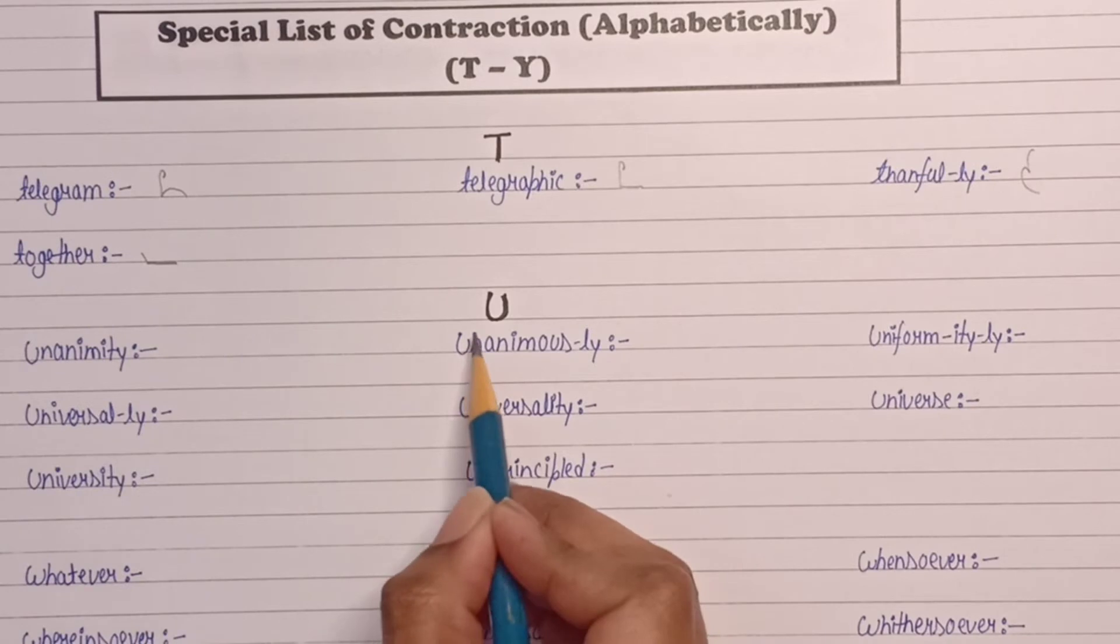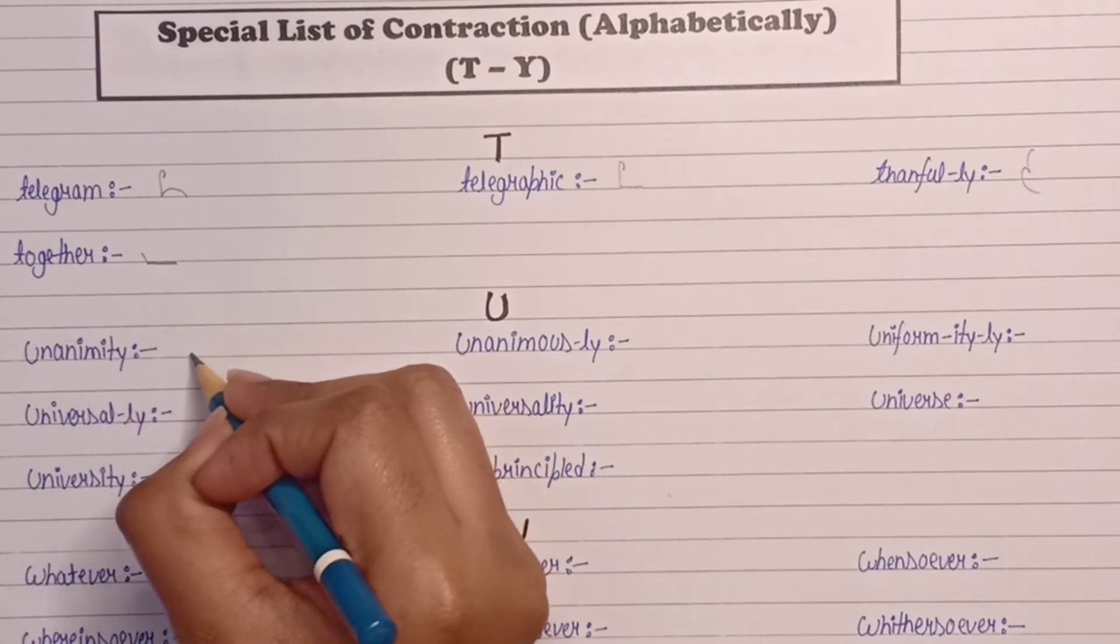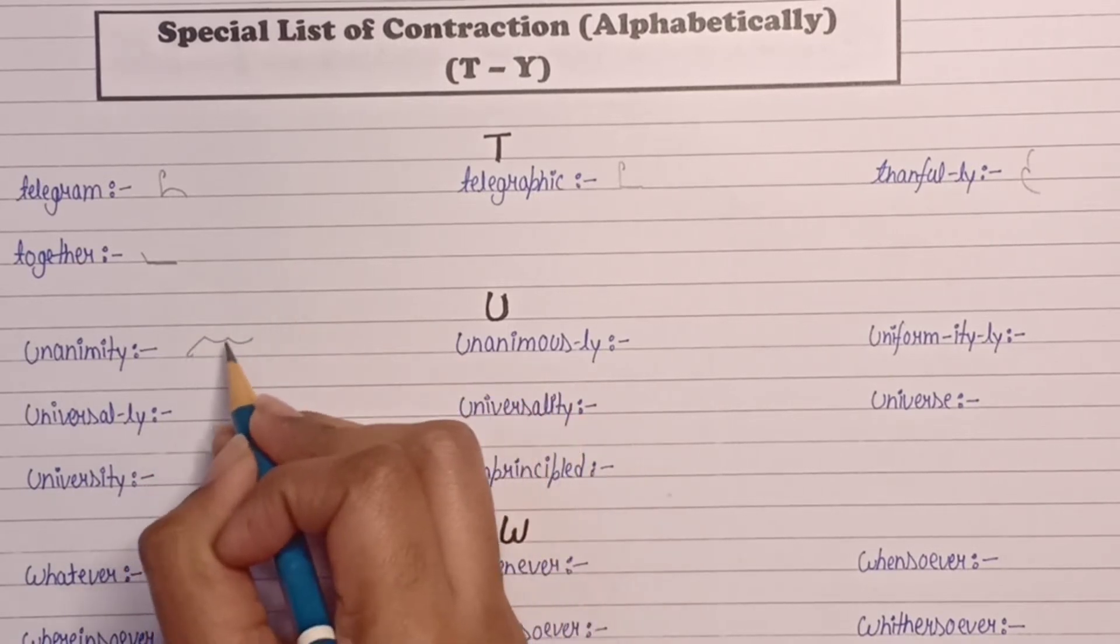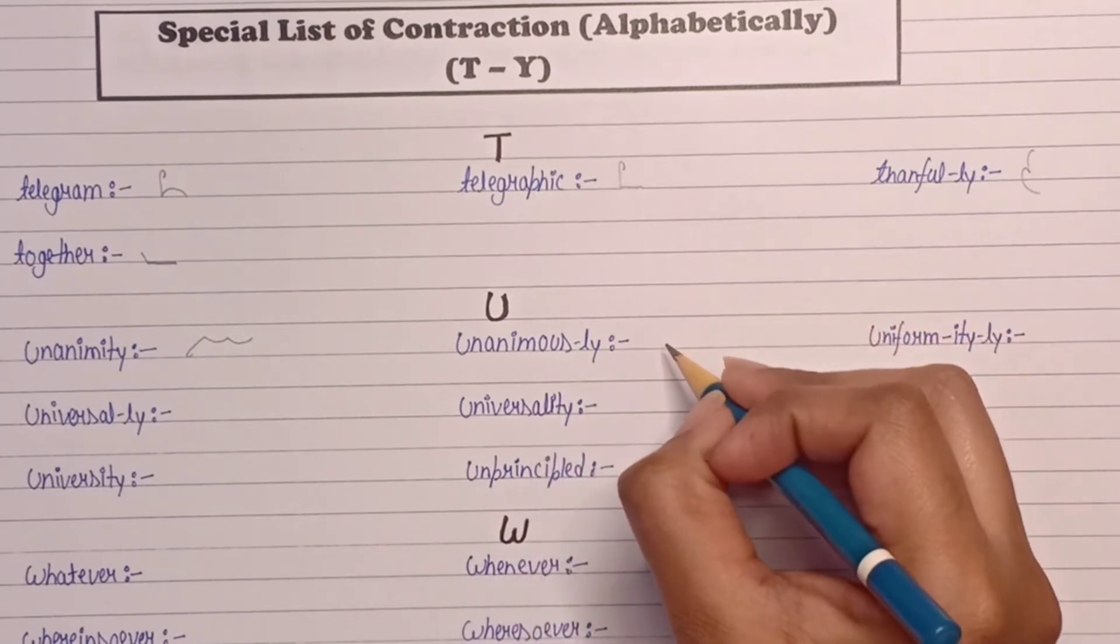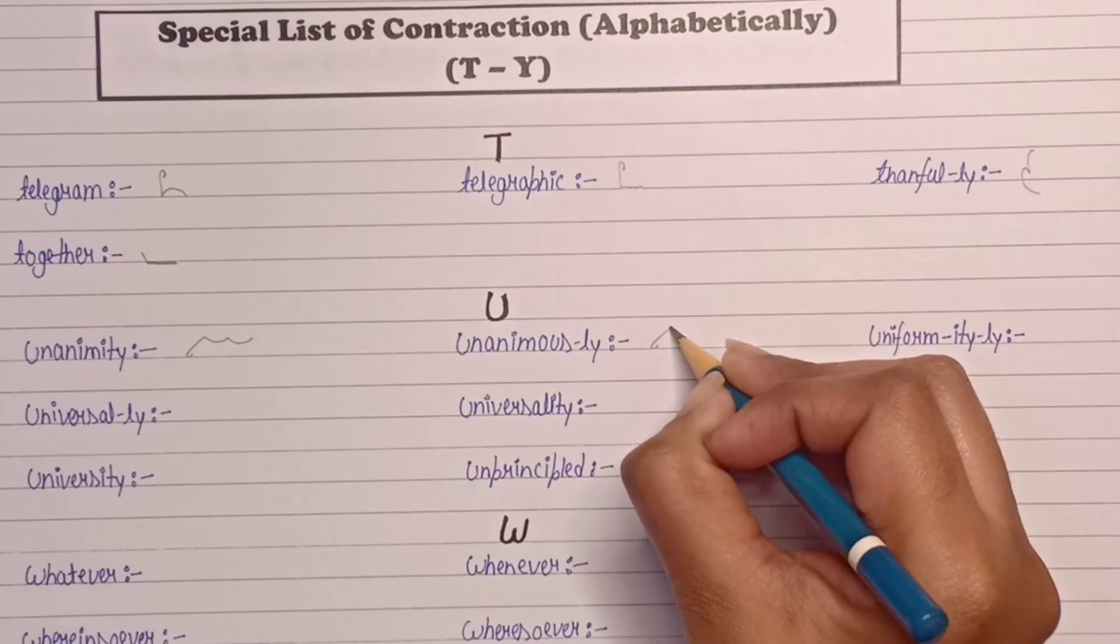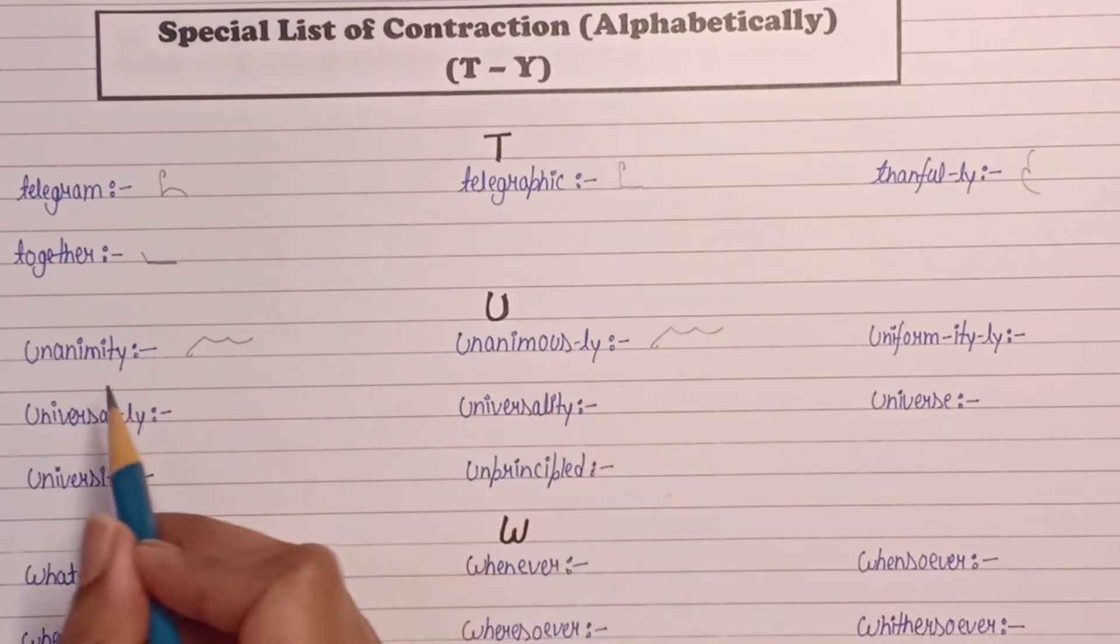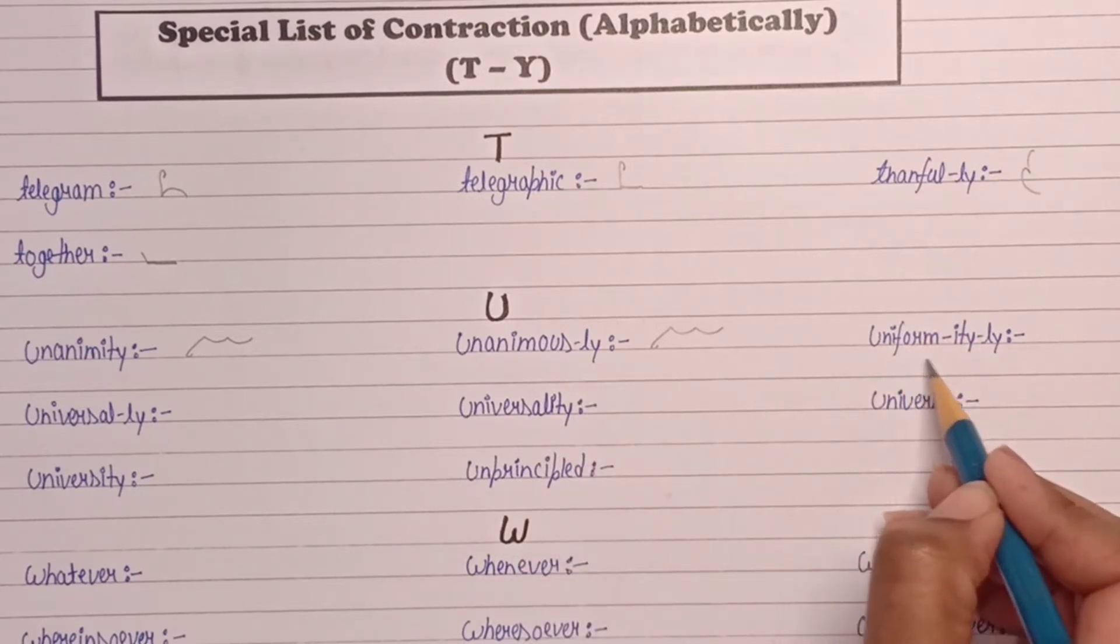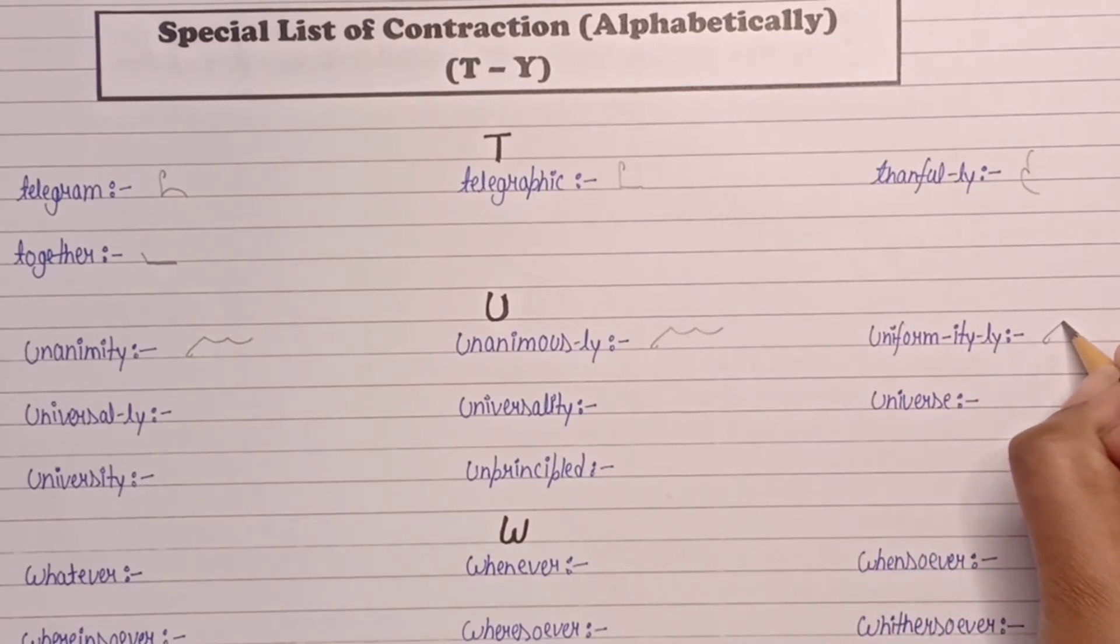Next alphabet is U. The word is unanimity: U-N-N. Next is unanimous or unanimously: U-N-N, similar outline to unanimity. Next is uniform, uniformity, or uniformly: outline is U-N.